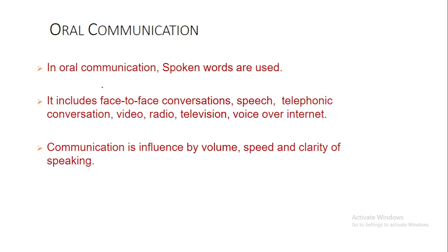These are the contexts of oral communication. Oral communication is influenced by volume, speed, and clarity of speaking. These are very important because when you are writing, your spellings and punctuation marks are very important. But when you are communicating the message through speaking, your volume, your speed, and the clarity of the words are critical — because if your speed is not adequate or the volume is not appropriate, or the words are not clear, the other person will not be able to understand you.